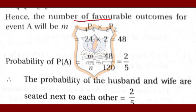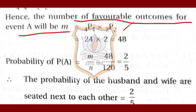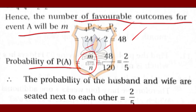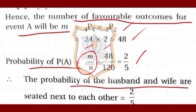The total number of favorable outcomes M = 4P4 × 2P2. 4P4 = 24 and 2P2 = 2, so M = 24 × 2 = 48. Probability = M/N = 48/120 = 2/5. The probability of husband and wife being seated next to each other is 2/5.